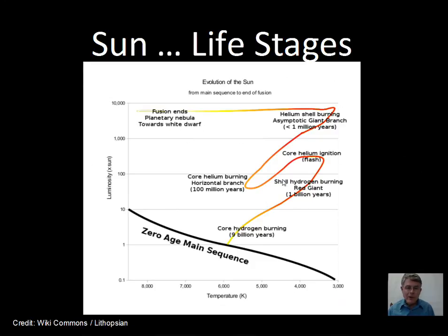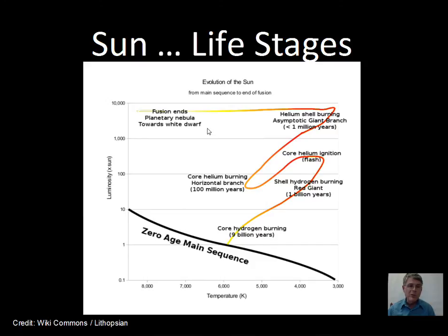Here again on the HR diagram with some of the timescales shown. You might notice a trend: the processes happen more rapidly as we get towards the end of the star's life up to this point. The white dwarfs are not shown on this diagram, but those involve very long timescales as well.